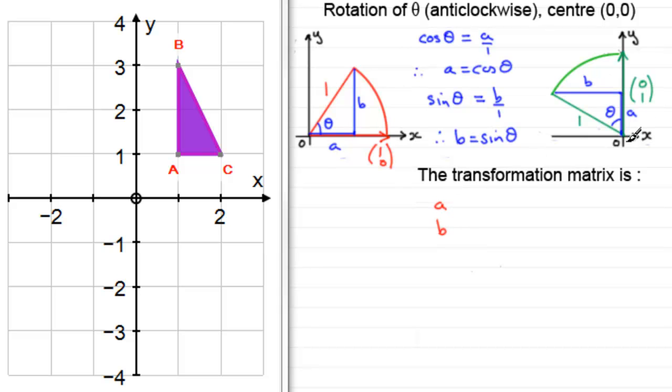And what happens to (0,1)? Well, it moves over to here, and the vector to that point is going to be (-b,a). Got to go -b that way and a units up, so we can write that in as -b and then a.